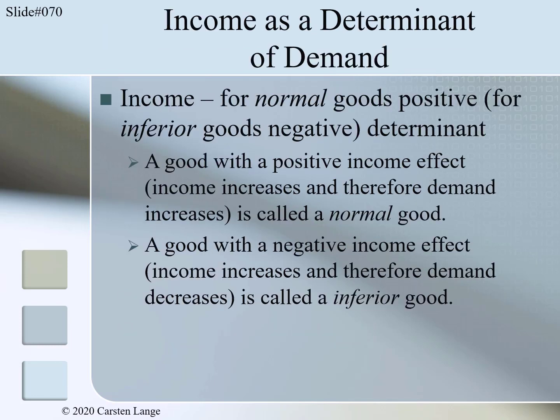When we talked about what determines demand, income was listed as an important determinant. Income is for most goods a positive determinant — we call these goods normal goods. As an example, we use the demand for visits to nice restaurants: the higher a person's income, the more nice restaurant dinners will be demanded. It was also mentioned that inferior goods have a negative income effect — an increase in income leads to lower demand.